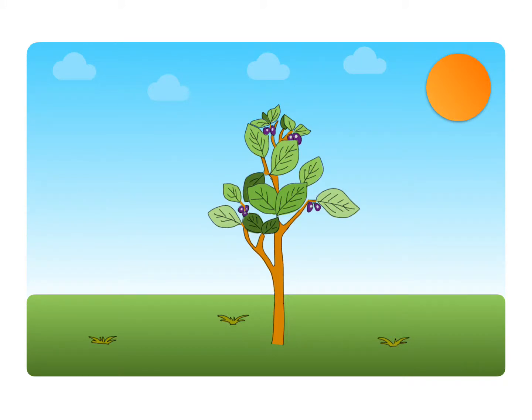Ever wondered why this process is called photosynthesis? The word photosynthesis is a combination of two words, photo and synthesis. Photo means light in Greek and synthesis means putting together or combining. Hence, photosynthesis literally means combining water and carbon dioxide in the presence of light.